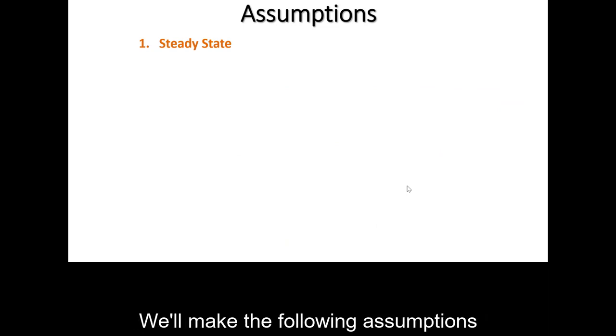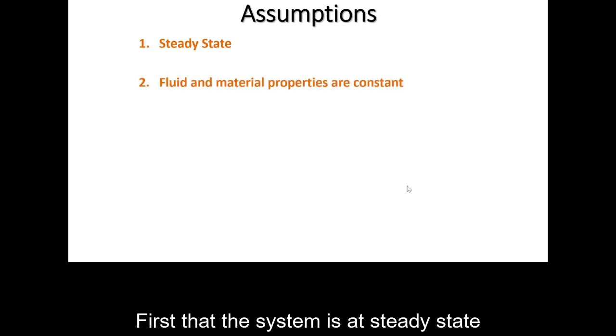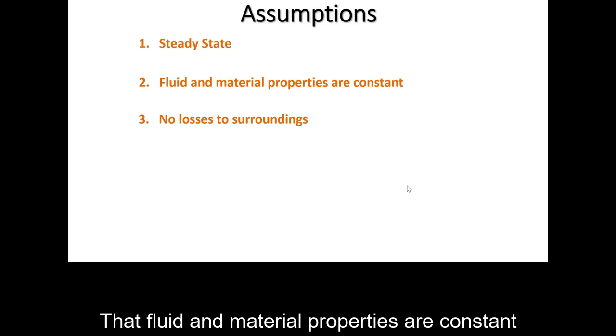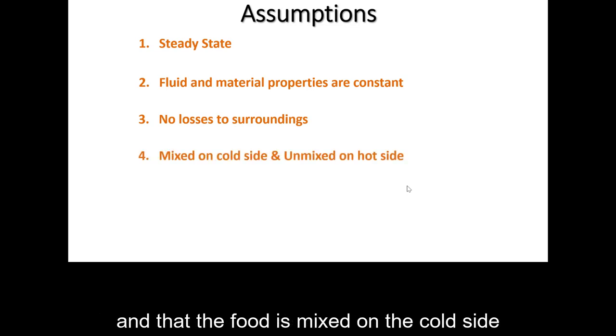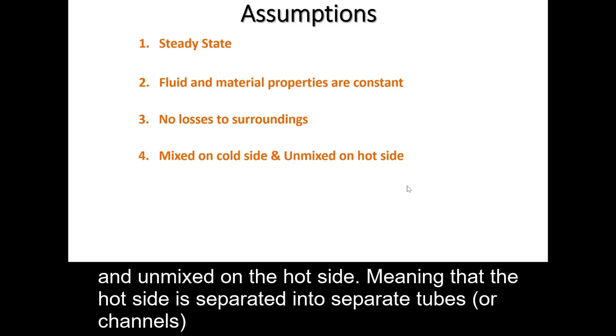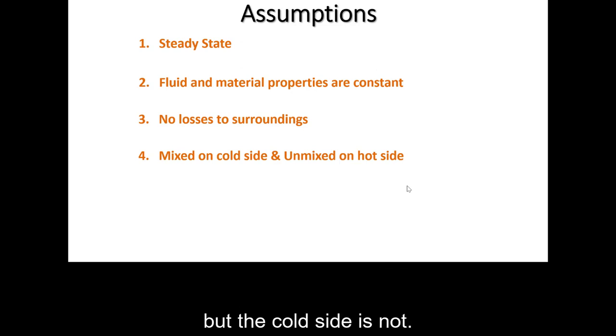We'll make the following assumptions. First, that the system is at steady state. That fluid and material properties are constant. That there are no losses to the surroundings. And that the fluid is mixed on the cold side and unmixed on the hot side. Meaning that the hot side is separated into separate tubes or channels. But the cold side is not.